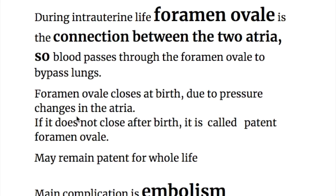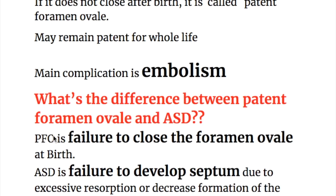Comparing ASD with patent foramen ovale: during intrauterine life, the foramen ovale is the connection between the two atria, allowing blood to bypass the lungs. Foramen ovale closes at birth due to pressure changes in the atria. If it does not close after birth, it is called patent foramen ovale, and it may remain patent for a whole life. The main complication of patent foramen ovale is embolism and thromboembolism.